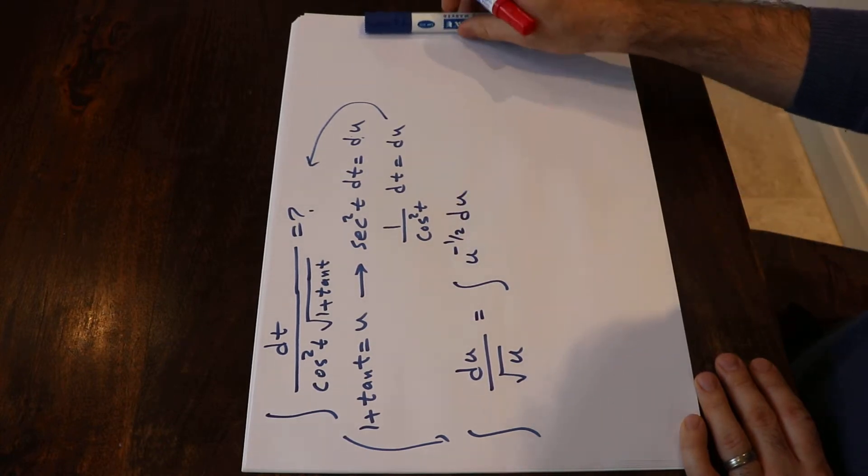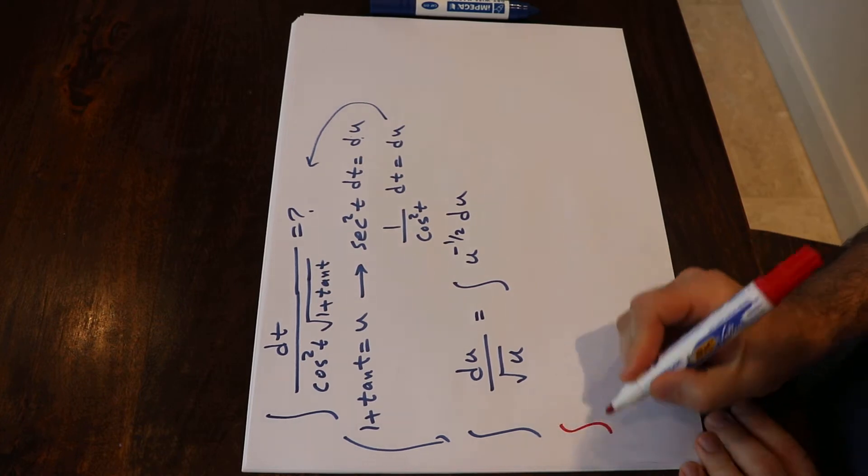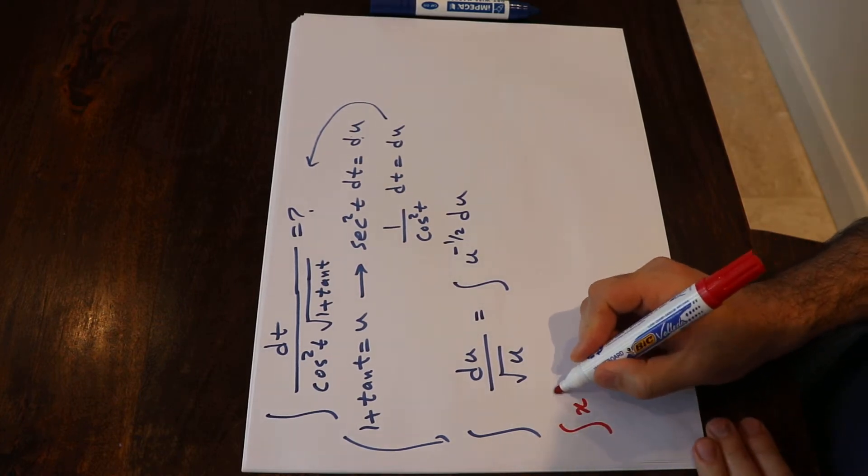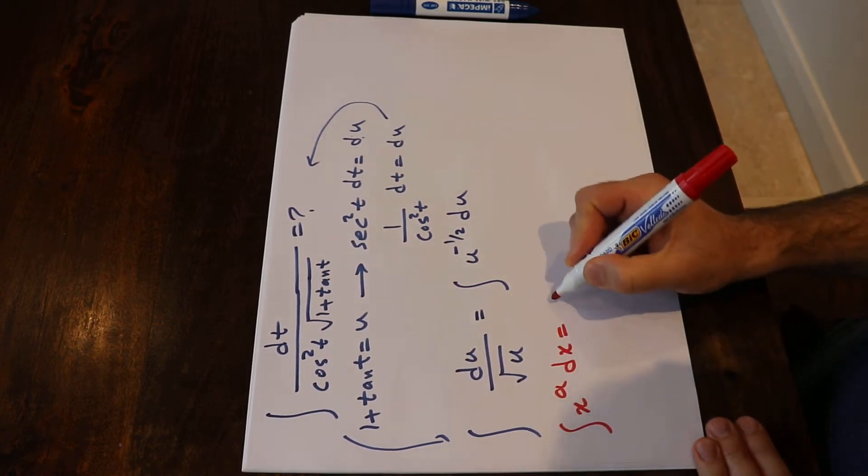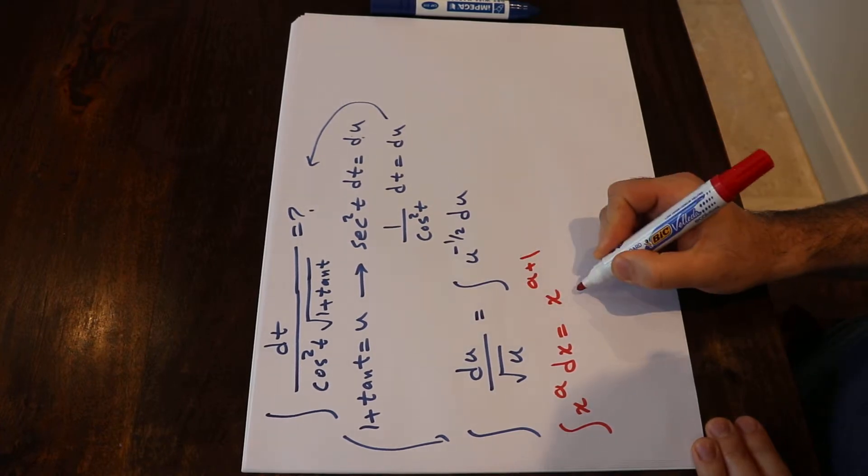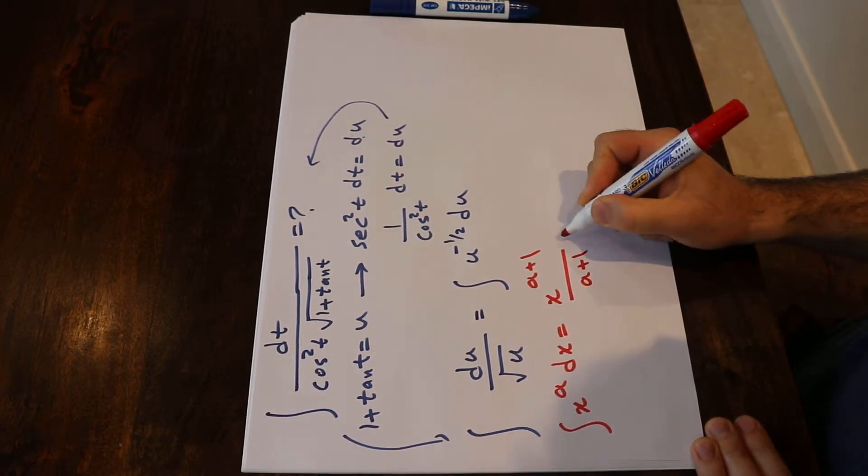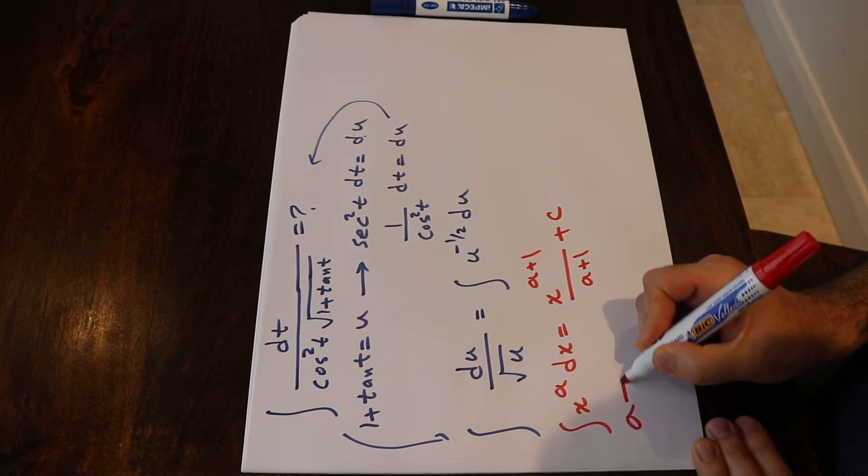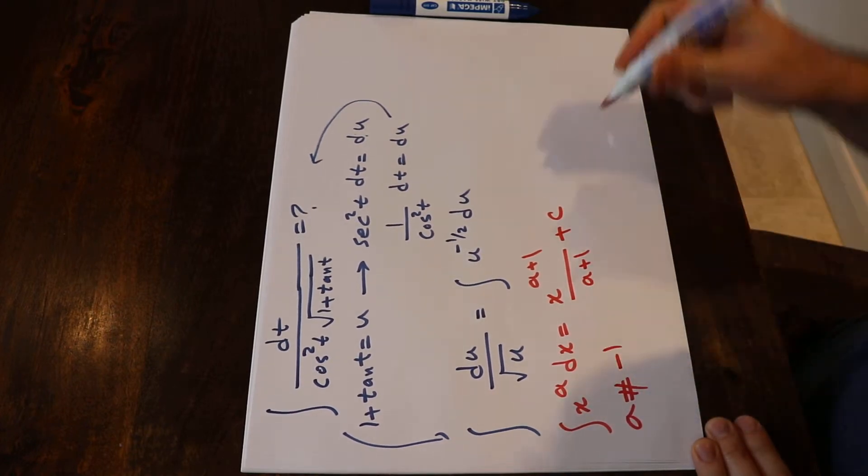Okay, to solve this integral you need to know one equation: the integral of x with the power of a dx is equal to x with the power of a plus 1 divided by a plus 1 plus c, assuming a is not equal to minus 1.